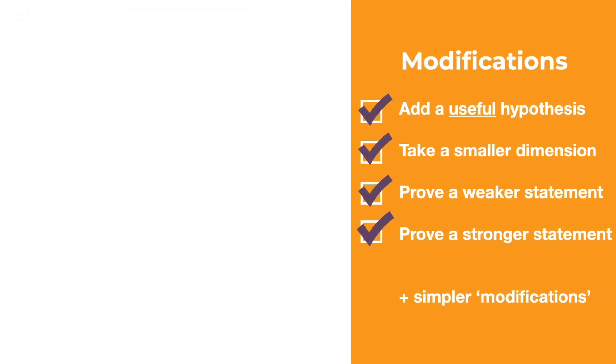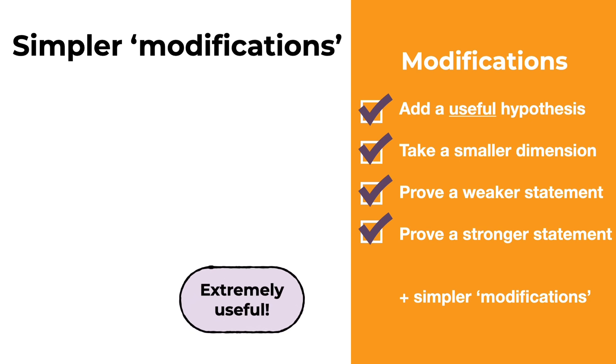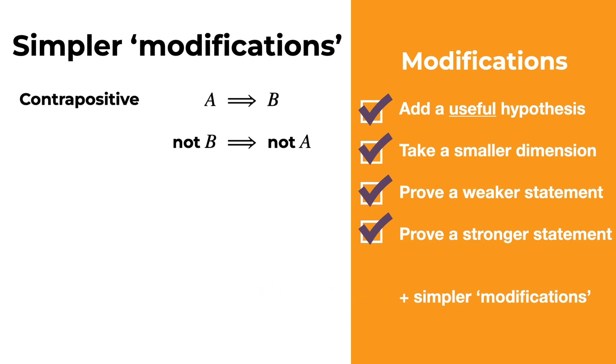Of course, there are simpler modifications you should always keep in mind, as they are extremely useful. Such as restating the problem to prove the contrapositive, or to prove by contradiction. Of course, don't forget that your problem may even be a modification of a similar problem. In which case, you might be able to use the same method or even the result.